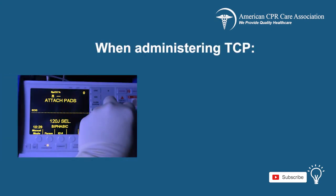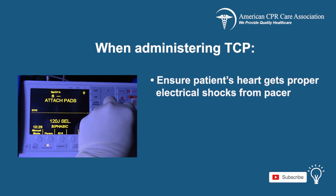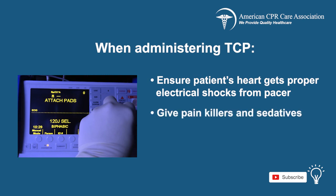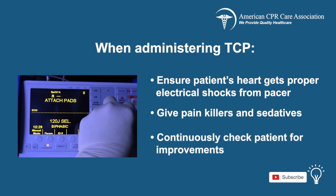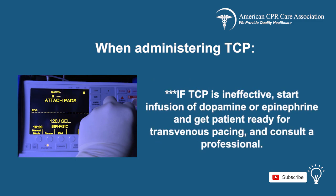Once TCP has been initiated, you must ensure that the patient's heart is getting proper electrical shocks from the pacer. Give analgesics and sedatives to help manage pain, especially in patients who are alert and stable, and consider administering these before TCP is initiated. Make sure to continuously monitor the patient to check for any improvements. If TCP is ineffective, start an infusion of dopamine or epinephrine and get the patient ready for transvenous pacing. Make sure to get a professional consultation.